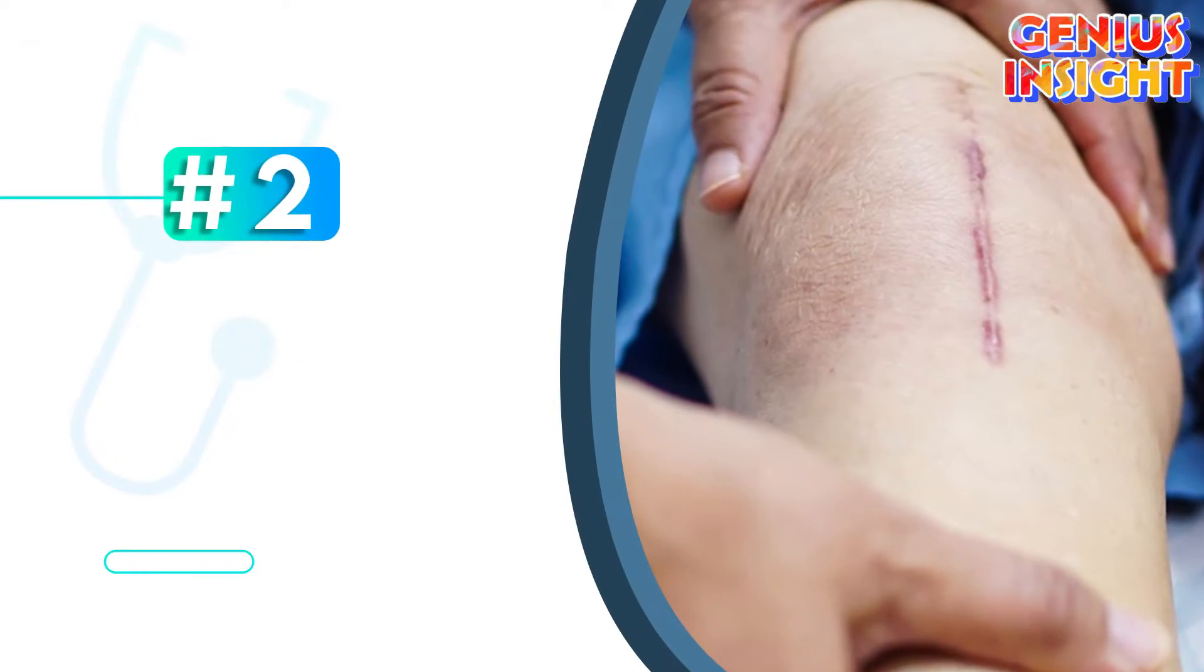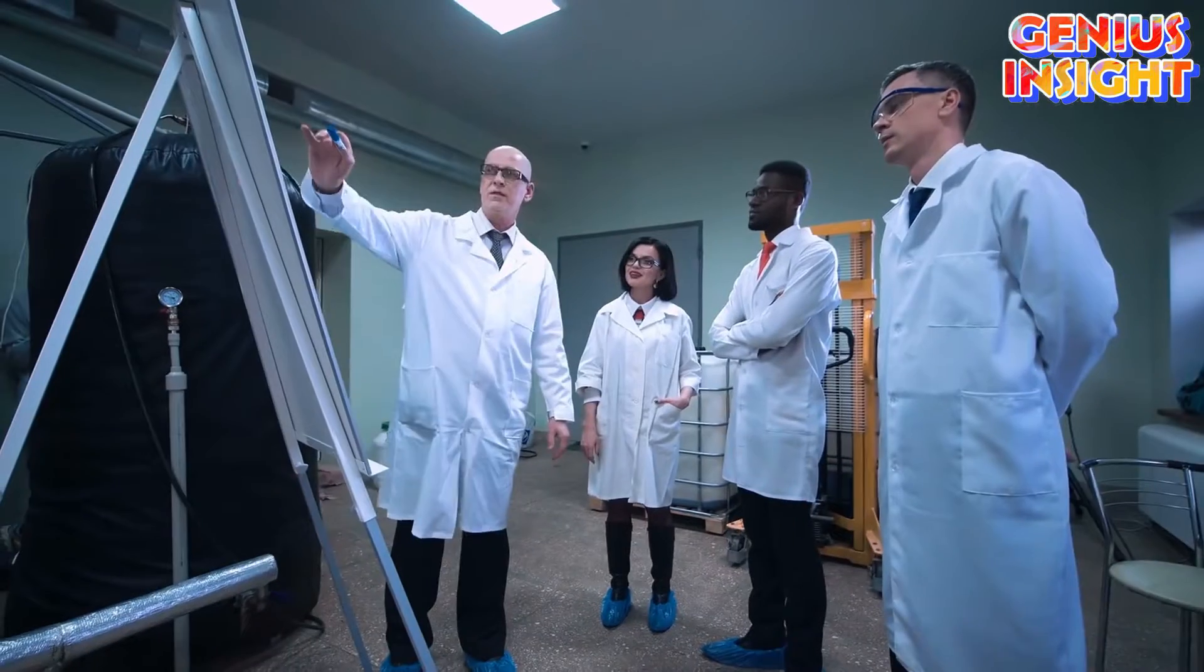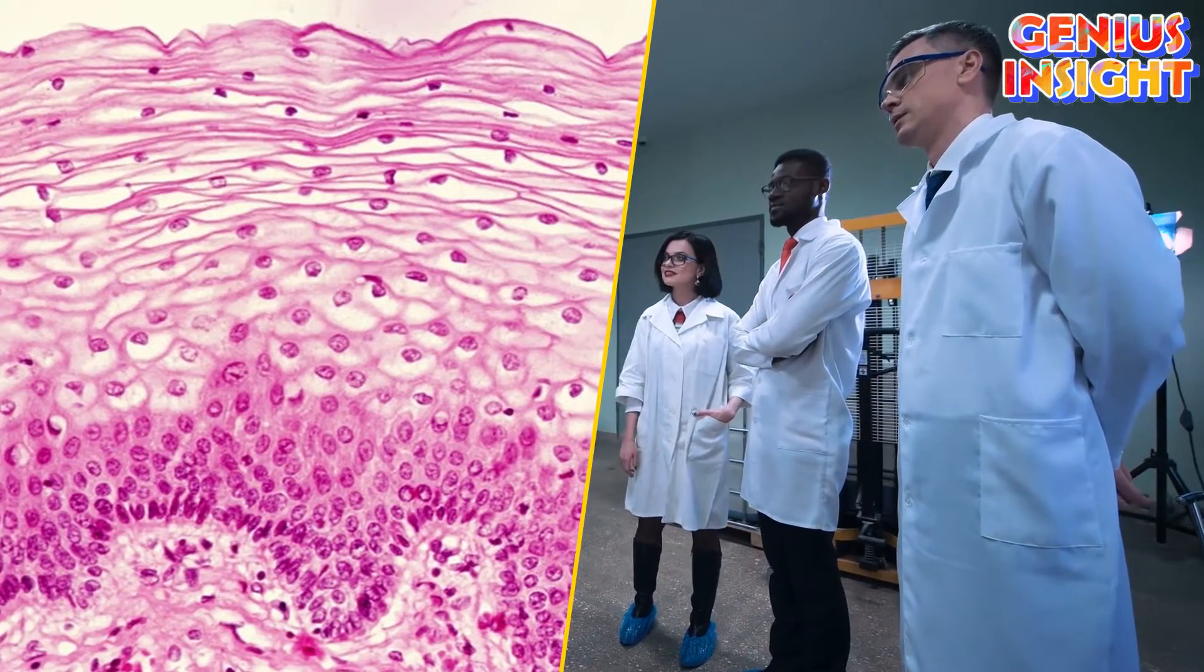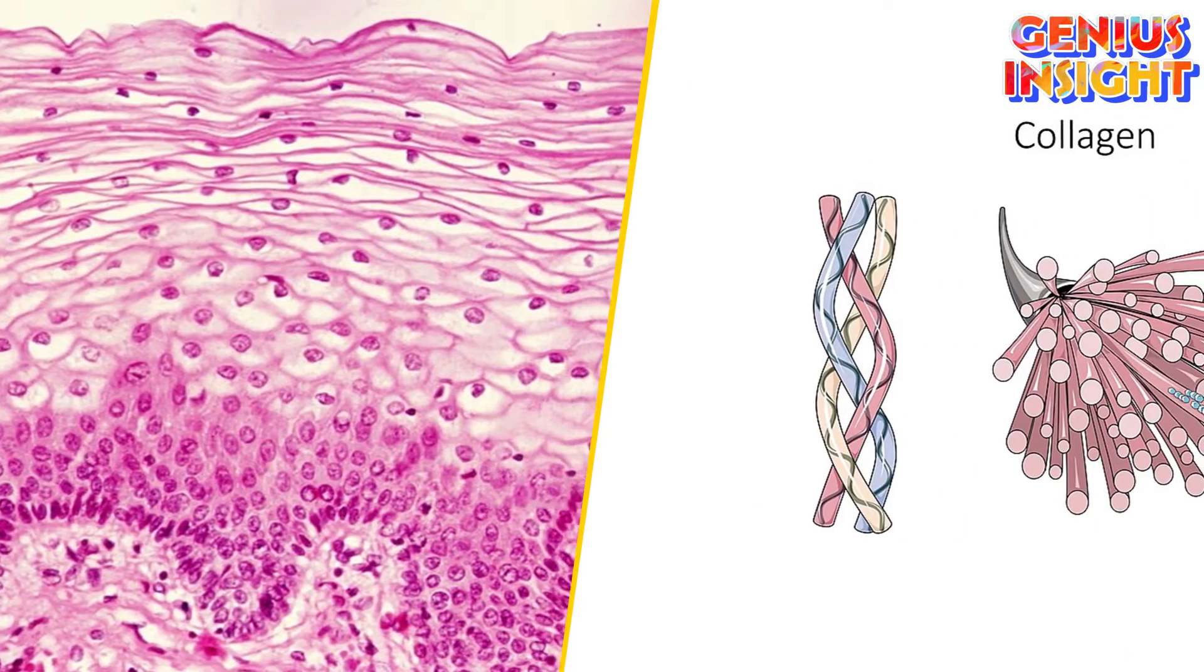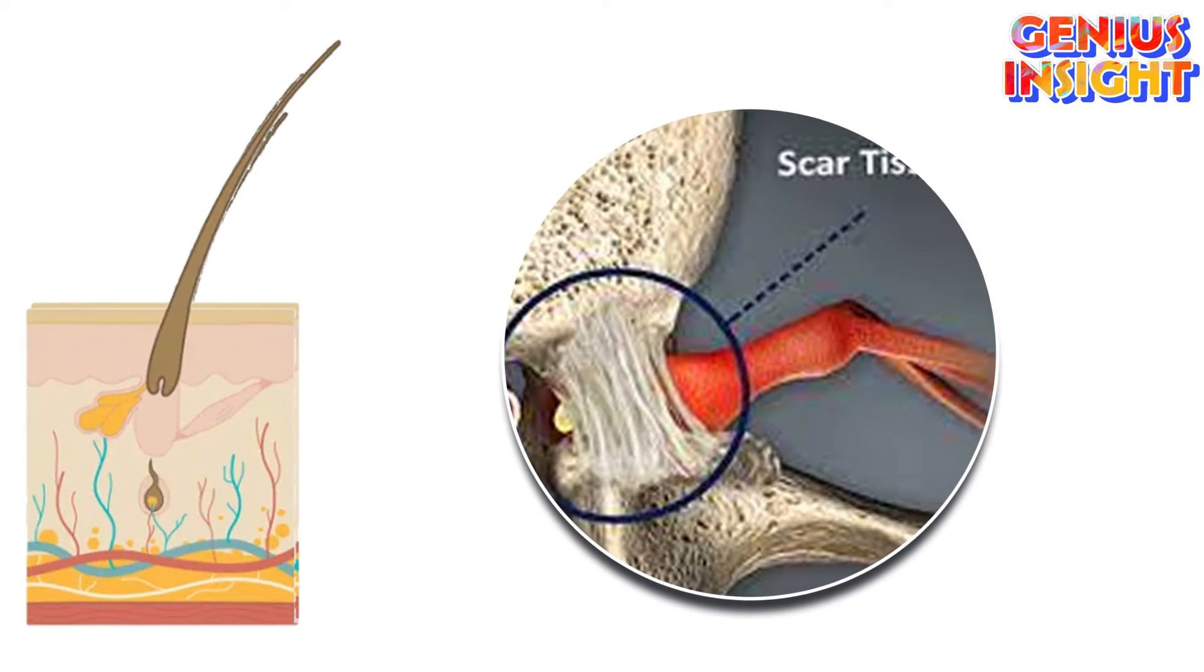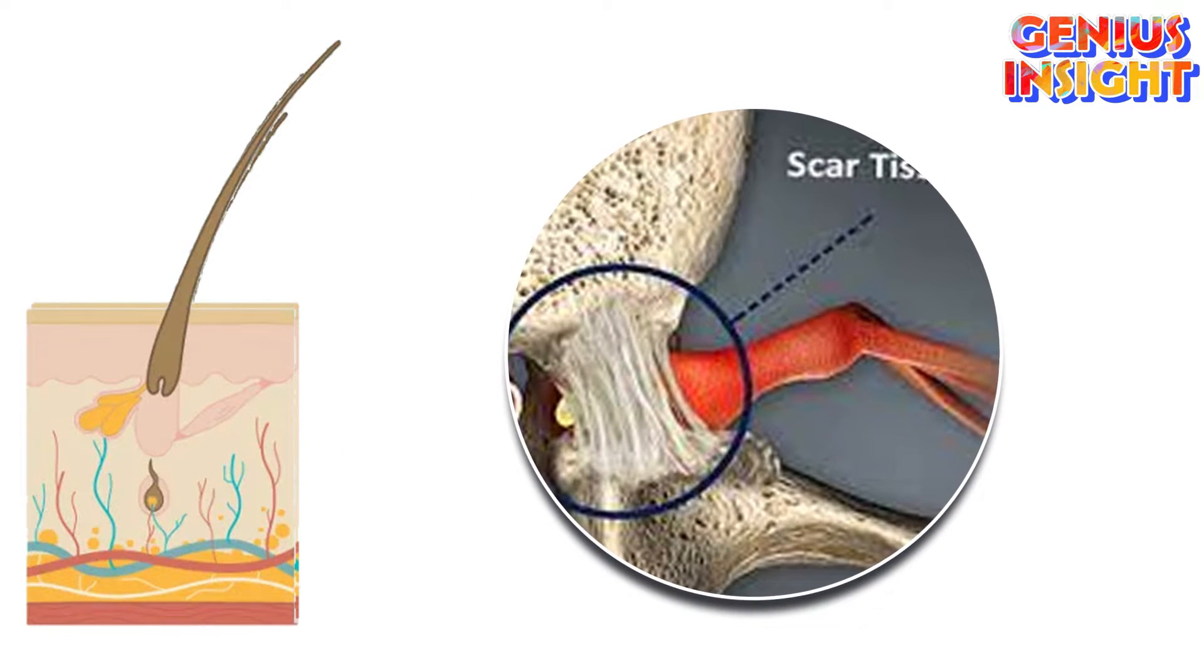Number 2: Helps Heal Incisions and Wounds. Studies have shown that stem cell therapy can help grow new healthy skin tissue, increase collagen production, stimulate hair growth after cuts or damage, and replace scar tissue with new improved healthy tissue.